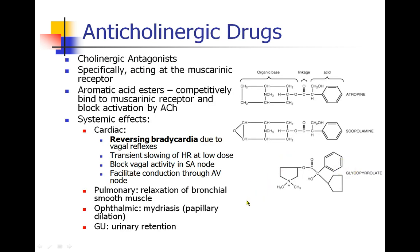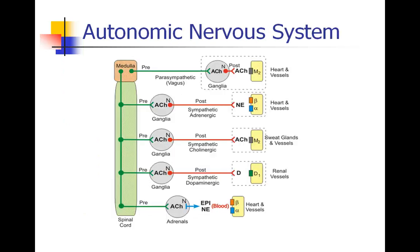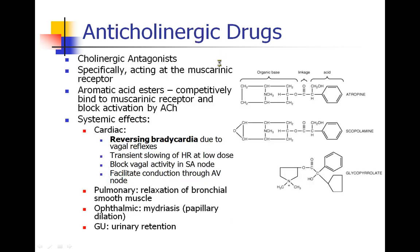There are drugs which bind to and antagonize the acetylcholine receptor — we call these cholinergic antagonists or anticholinergic drugs. Most anticholinergic drugs are meant to act at the muscarinic receptor because the muscarinic receptor is on the target tissue. If an anticholinergic bound at the nicotinic receptor, it would affect both sympathetic and parasympathetic fibers. Most of these drugs are aromatic acid esters which competitively block activation by acetylcholine. In the cardiac system, blocking parasympathetic activity means reversing bradycardia — atropine or glycopyrrolate can be used to reverse bradycardia caused by a vagal reflex.